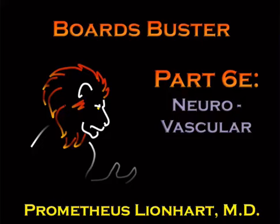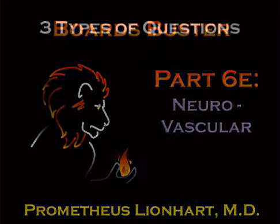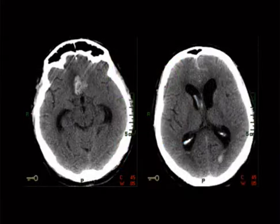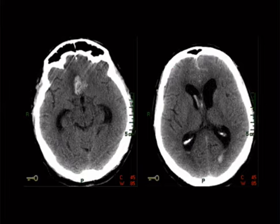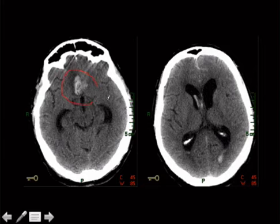This is our vascular neuro talk. First case: we've got a non-contrast axial CT at two different levels, one through the ventricles and one a little bit lower down. What we're seeing is some hemorrhage right through here, a little bit more here, and a little bit here and here. So we've got some subarachnoid hemorrhage.